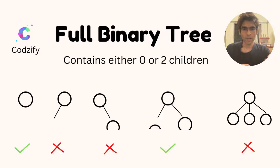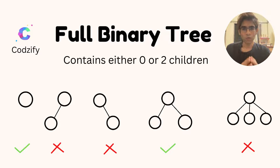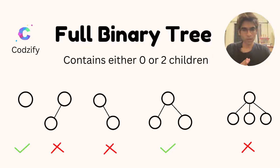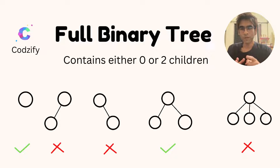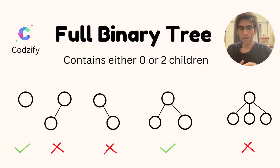Full binary tree. A full binary tree contains either 0 or 2 children — not 1. The first example here contains zero children, so this is a full binary tree.